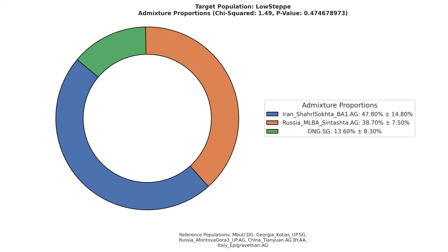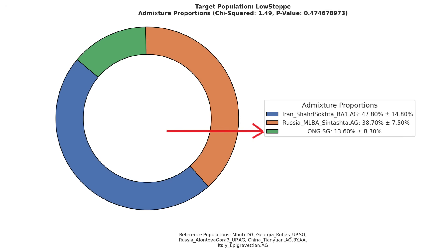Here's the same model but for the lowest steppe individual. According to it, 39% of his ancestry is steppe-related, 48% is Iranian farmer-related, and 14% derives from Indigenous Indian hunter-gatherers.